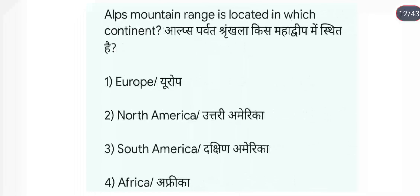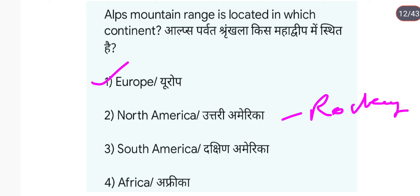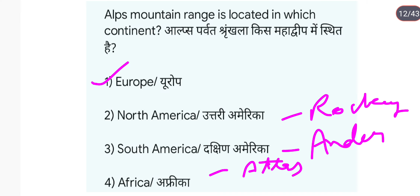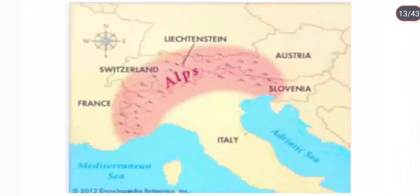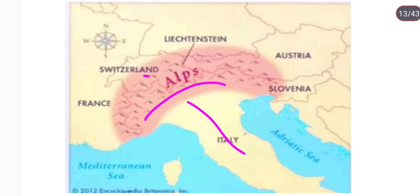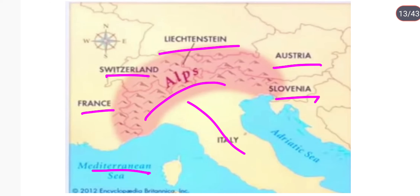Alps mountain range is located in Europe. North America में Rocky Mountains है, South America में Andes है, और Africa में Atlas Mountains famous है। Alps mountain यहाँ आपका Italy, Switzerland, France, Liechtenstein, Austria, Slovenia — यह सारे इसके parts हो जाते हैं। यह आपका Europe है जो Mediterranean Sea पर जाता है।